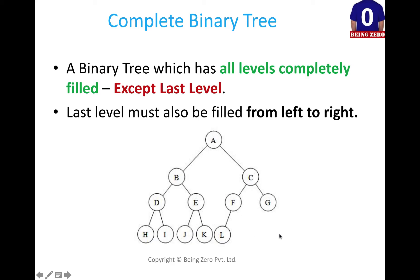If you see, this is the last level. At the last level, we have nodes filled from left to right, and the last level is not complete, but all the other levels are having complete children. So this is the definition of a complete binary tree.